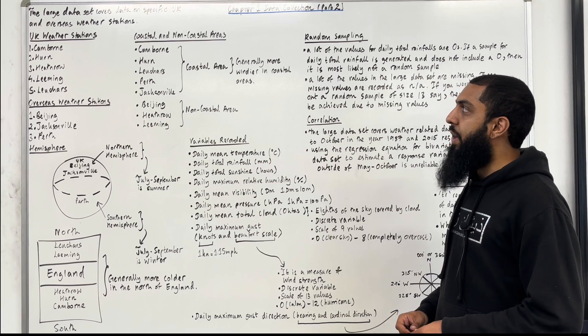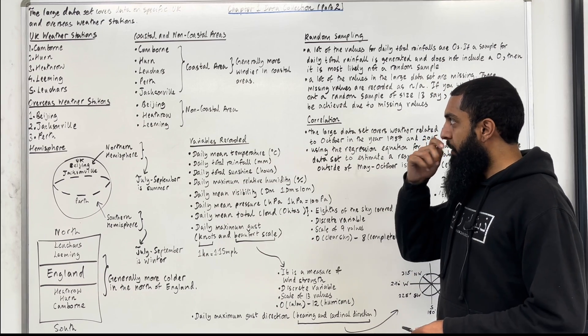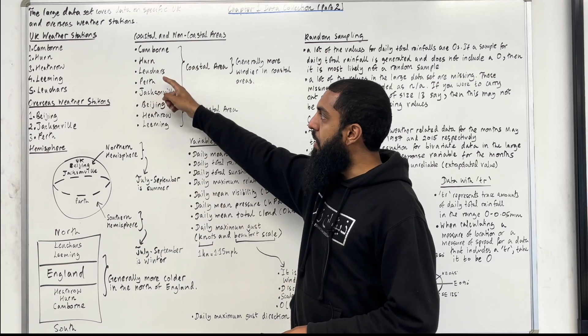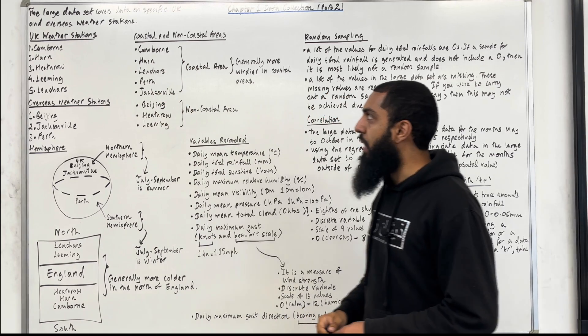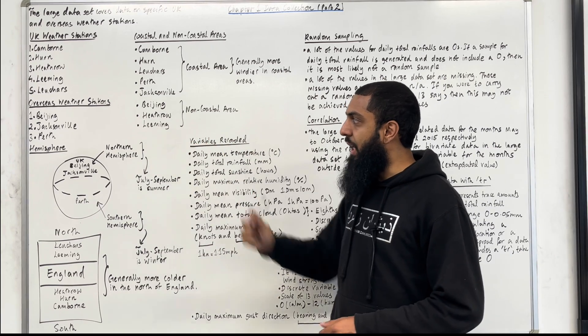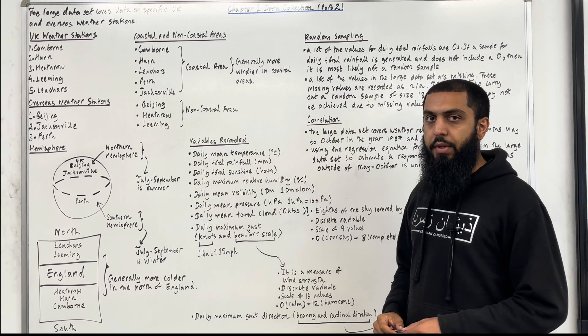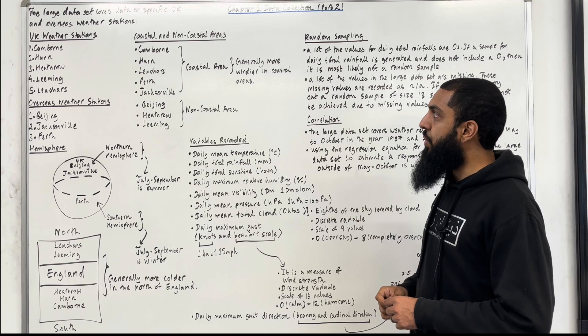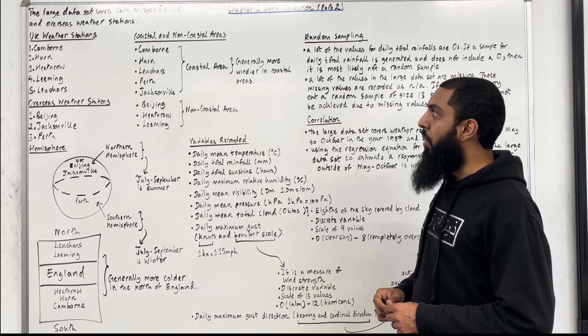Moving on to coastal and non-coastal areas. Camborne, Herne, Leuchars, Perth and Jacksonville are located in coastal areas. Whereas Beijing, Heathrow and Leeming are located in non-coastal areas. We know that in coastal areas it is generally more windy.